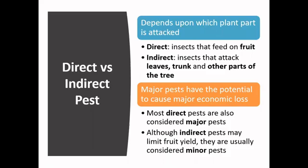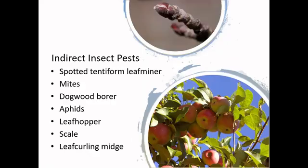Before we get into a discussion on a particular insect pest, I wanted to touch base on what is meant by a direct versus an indirect pest. This really depends on what part of the plant is attacked. In apples in particular, a direct insect pest feeds specifically on the fruit, whereas an indirect pest attacks the leaves, the trunk, or any other part of the tree. Major pests have the potential to cause major economic loss, and in most cases direct pests are also considered major pests. While indirect pests may limit fruit yield, they're often considered minor pests — though that does not mean indirect pests cannot cause significant economic loss.